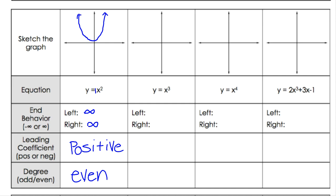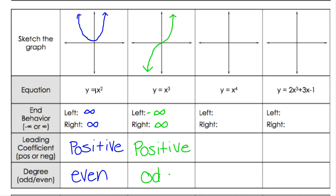Next we have an x³ function. An x³ graph looks something like this. The left side is pointing downwards towards negative infinity, and the right side is pointing upwards towards infinity. The leading coefficient is positive — it would be a 1. And our degree on this one is 3rd degree, so that would be an odd degree polynomial.